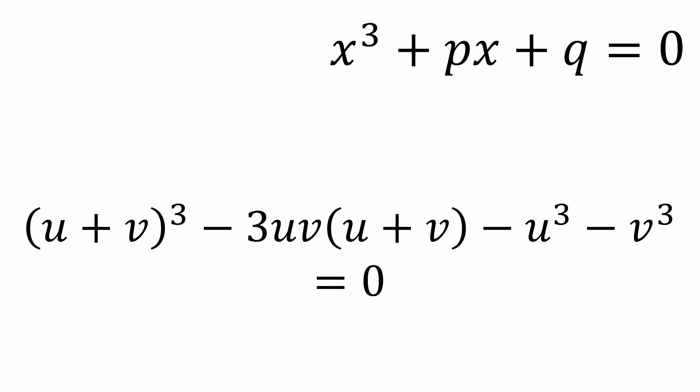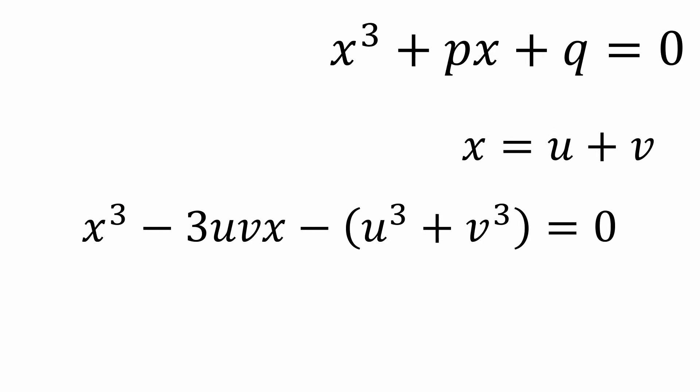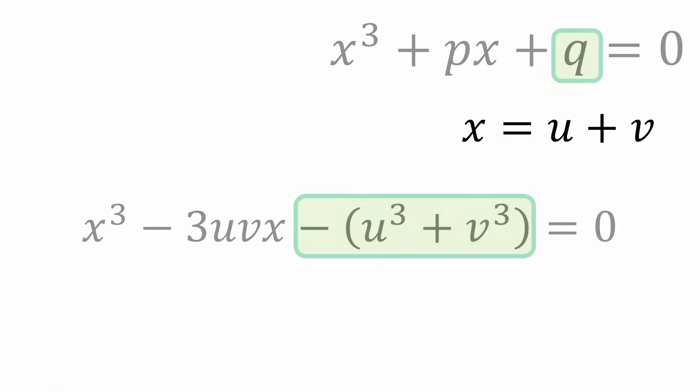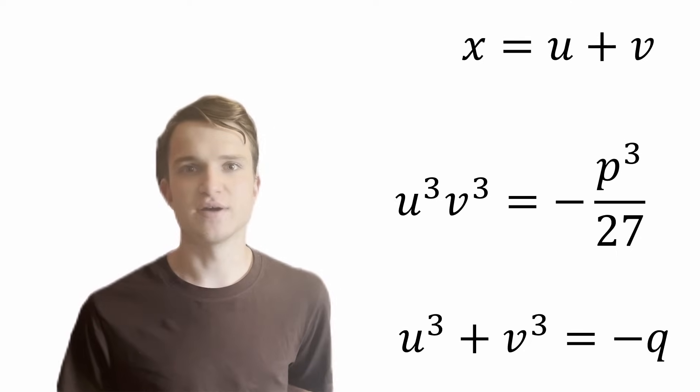If we let x = u + v, this is just a depressed cubic. The equation is always true for any values of u and v, as long as x = u + v. So what we want to do is find the values of u and v for which this cubic matches the one we're trying to solve. That means we want -3uv = p and -(u³ + v³) = q. So we have these two simultaneous equations. Cubing the first gives u³v³ = -p³/27. Now I have two numbers: their product is -p³/27, and their sum is -q. Those two numbers are u³ and v³.